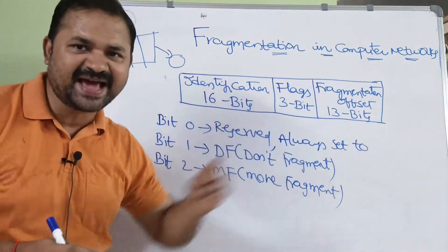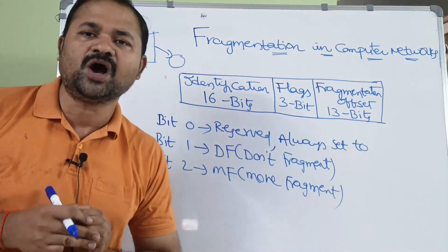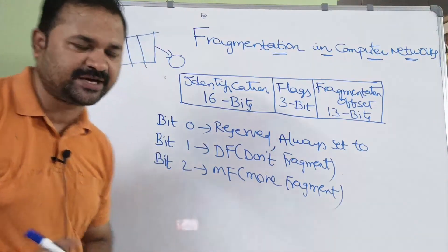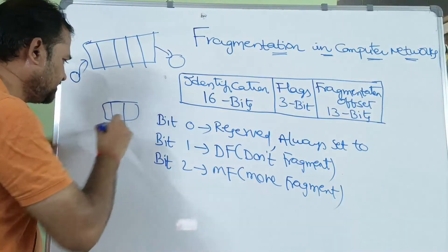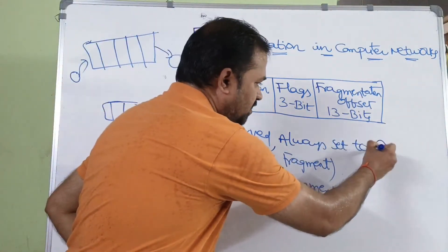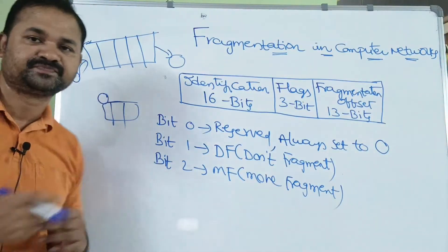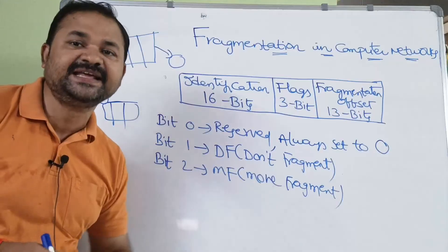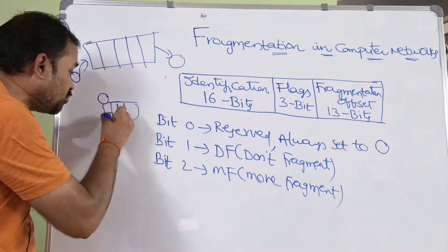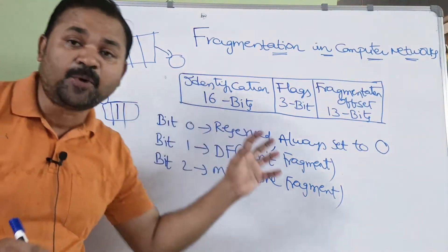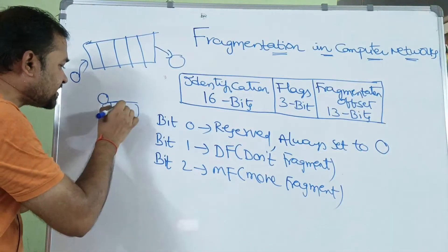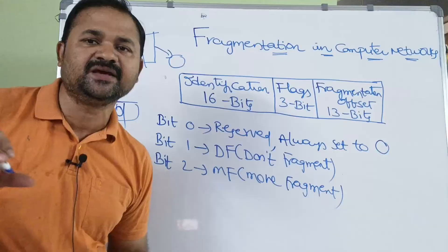And the next one is flags, which is of size 3 bits. We have three flags: bit 0, bit 1, bit 2. Bit 0 is reserved and always set to 0. It is used for future use. Whereas bit 1 specifies DF, which means don't fragment. If DF is set to 1, then the corresponding packet should not be fragmented. Whereas if DF is set to 0, then the packet can be fragmented.